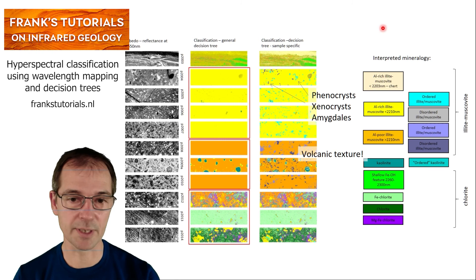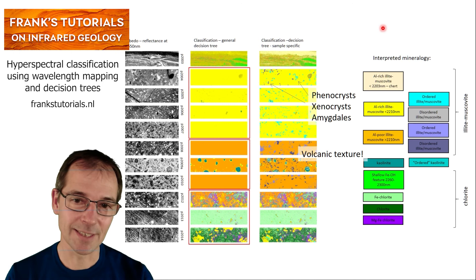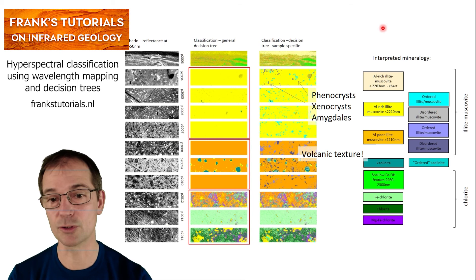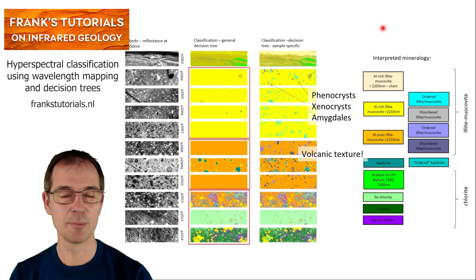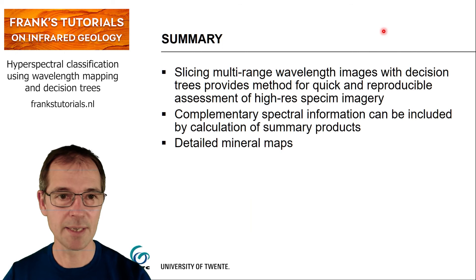This shows that the standard classification using standard decision trees is useful and already reveals a lot about mineralogy, but you can optimize it by calculating summary products and creating a more specific decision tree for the particular dataset. It also offers the opportunity to calculate microstructural attributes from these images — but that's another story for another time.